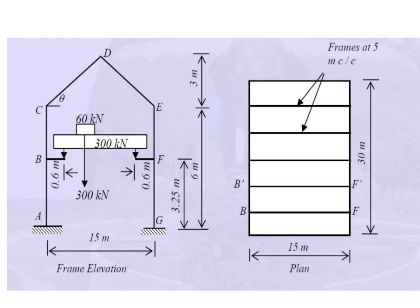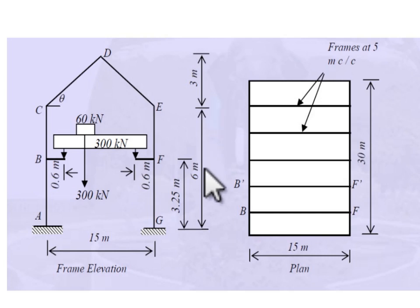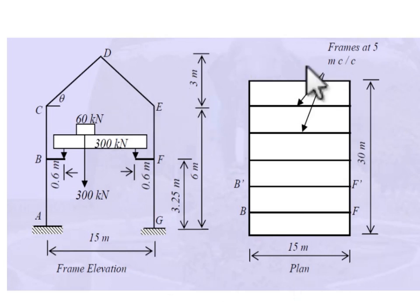Looking at the figure, this is the roof truss supported by columns. The plan area shown consists of 15 meters width and 30 meters length of the building. We can conclude we have six frames each having a 15-meter span placed at 5 meters center to center. From this figure, the load description gives values of 60 kN and 300 kN, and theta is the angle of the roof truss.